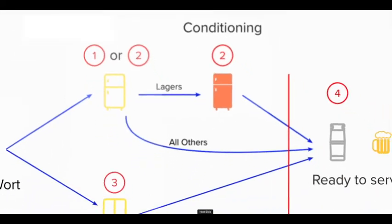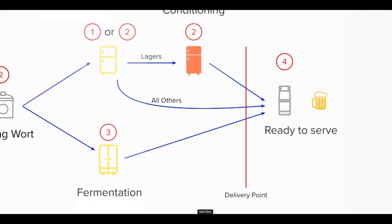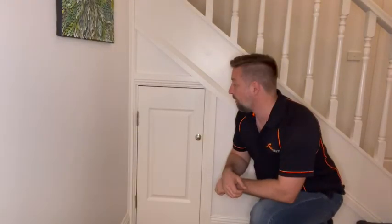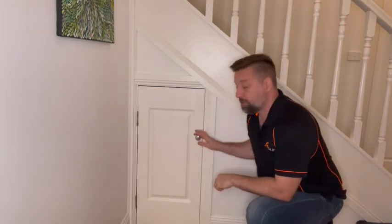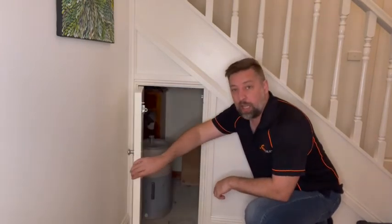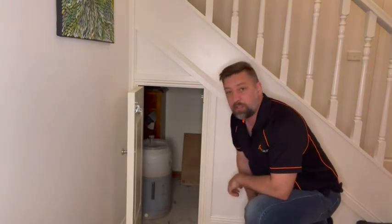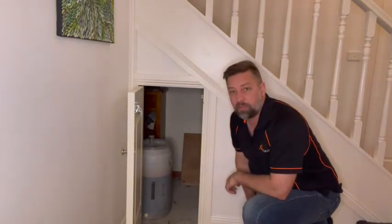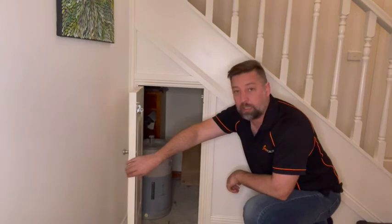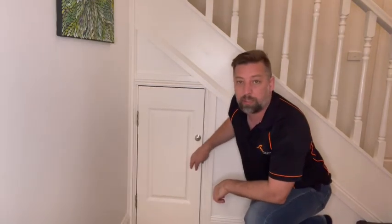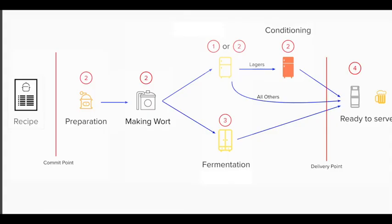Let's look at an alternative situation where we can do some more fermentation and not have such a bottleneck. Here we have what I call the Harry Potter cupboard, conveniently located under the stairs. It keeps a nice constant temperature, and as you can see we can get some fermenters in under there — the maximum is about three fermenters that I can get in here to ferment our beer.